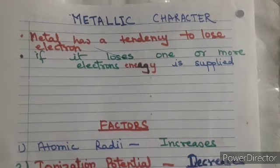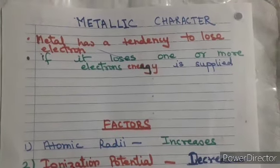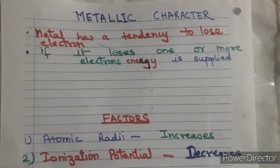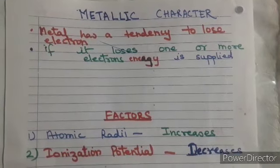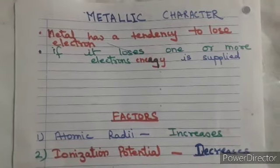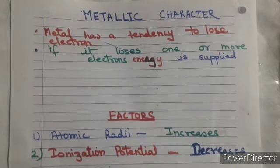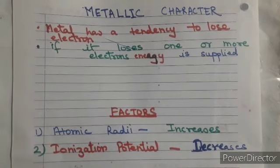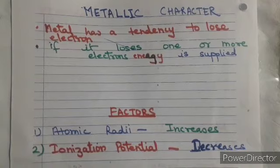Good morning, class 10th. We will study about metallic characters and different factors for metallic characters, and we'll also see its variation in the periodic table. As you know, metals have the tendency to lose electrons from their outermost orbit, and whenever they are losing electrons, energy is required.